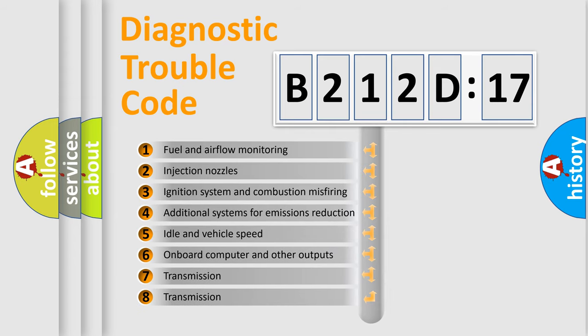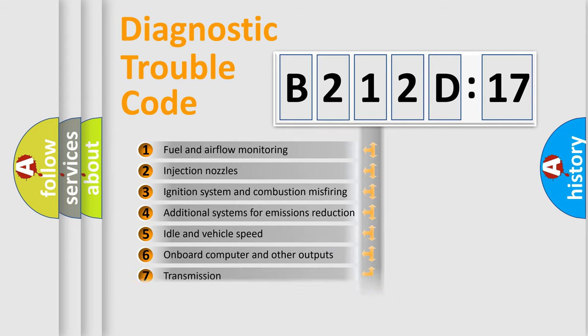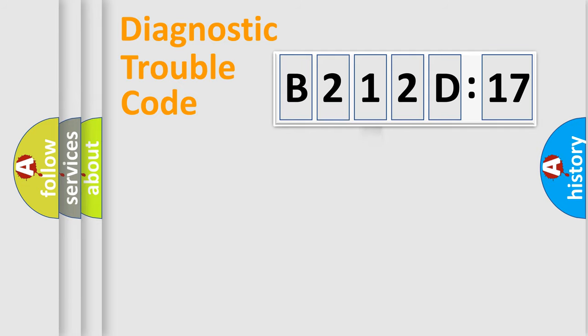The third character specifies a subset of errors. The distribution shown is valid only for the standardized DTC code. Only the last two characters define the specific fault of the group.